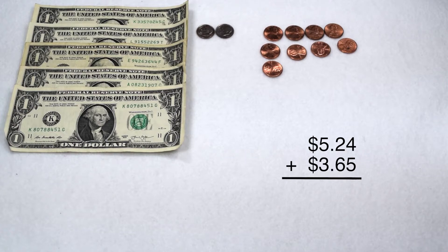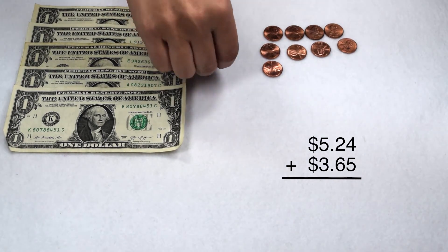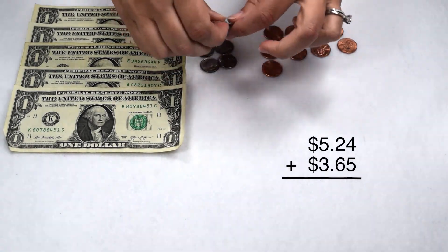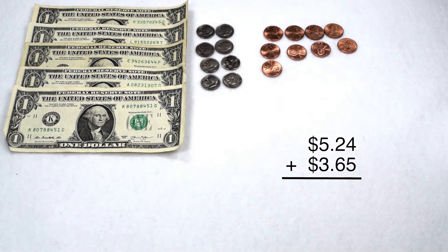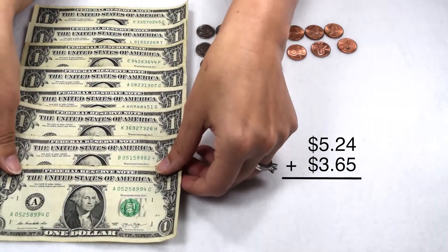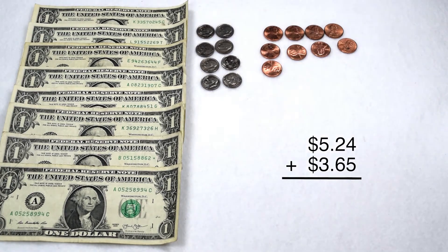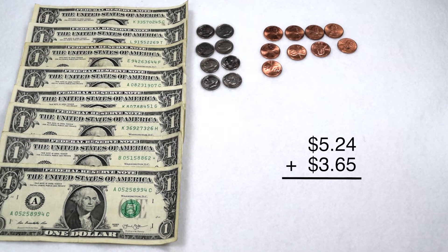To my dimes, I have two dimes and I'm going to add six more to give me a total of eight dimes. In my dollars, I have $5 and I'm going to add three more for a total of $8. When I add those dollar values together, I have a total of $8.89.